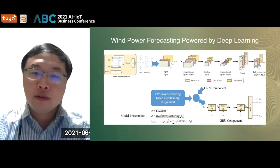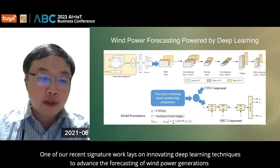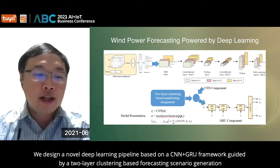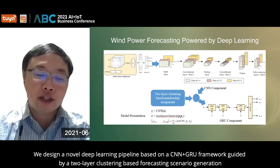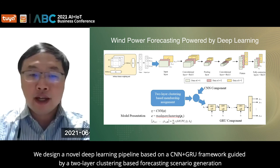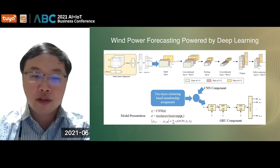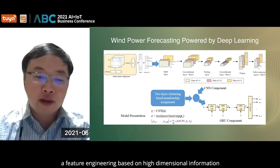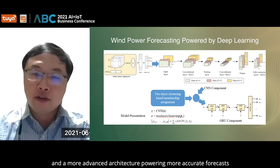One of our recent signature works lays on innovative deep learning techniques to advance the forecasting of wind power generation. We designed a novel deep learning pipeline based on a convolutional neural network plus gated recurrent units framework, guided by a two-layer clustering-based forecasting scenario generation, which offers a new paradigm of using SCADA data with feature engineering based on high-dimensional information and a more advanced architecture powering more accurate forecasts.